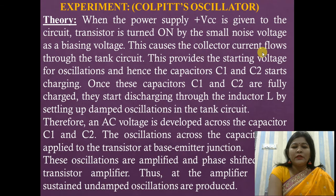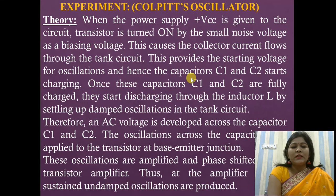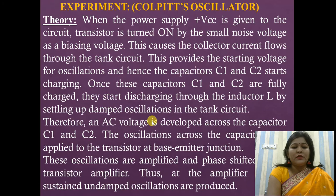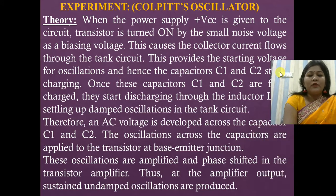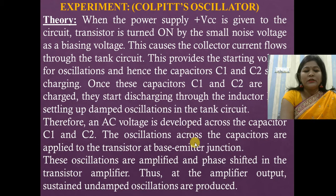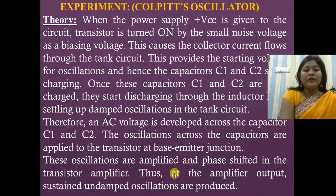This causes the collector current IC to flow through the tank circuit, providing the starting voltage of oscillations, and hence capacitors C1 and C2 start charging. Once C1 and C2 are fully charged, they start discharging through the inductor L, setting up damped oscillations in the tank circuit. An AC voltage is developed across C1 and C2, and these oscillations are applied to the transistor at the base-emitter junction, where they are amplified and phase-shifted, producing sustained undamped oscillations at the output.